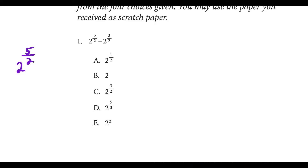First up, we have to simplify this expression. The first thing I notice is that we could factor the first expression, as we have 2 to the 5 halves — 2 to the 5 over 2 — and we could rewrite this as 2 to the 3 halves times 2 to the 2 over 2.